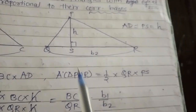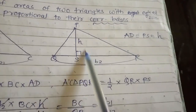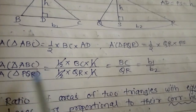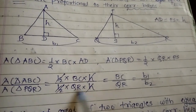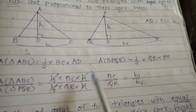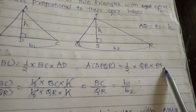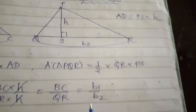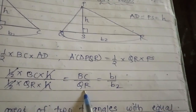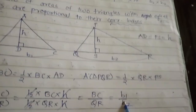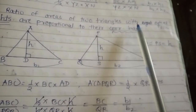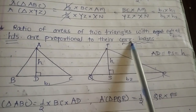Area of triangle ABC is half into BC into AD, and area of triangle PQR is half into QR into PS. Taking the ratio, area of ABC upon area of PQR equals half into BC into AD upon half into QR into H. Since AD equals PS equals H, the H cancels and we get BC upon QR, which is B1 upon B2. So if the heights are same, the ratio of area of two triangles is proportional to their bases.